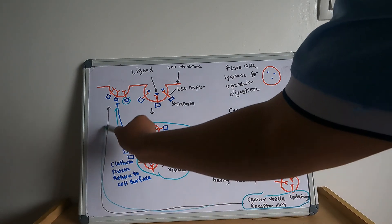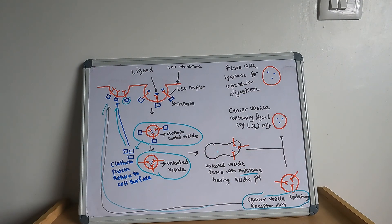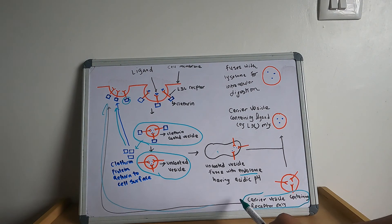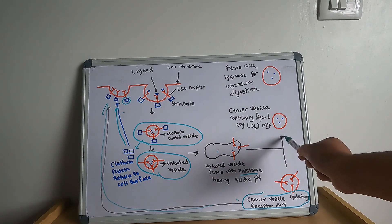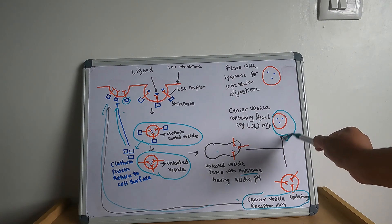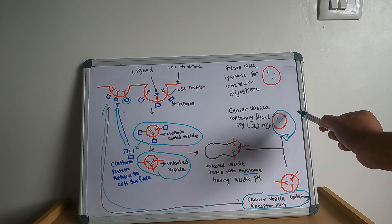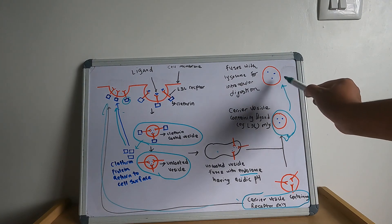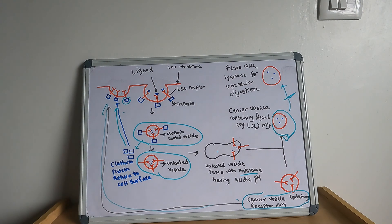After sorting, the receptors are returned to the plasma membrane through carrier vesicles that bud off from the endosome, so the receptors are reused. The endosome containing the ligand macromolecule then fuses with the lysosome, and the ligands are degraded. One example is that immunoviruses enter cells through receptor-mediated endocytosis.